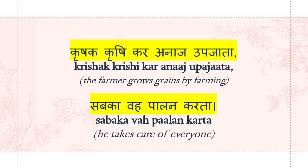Sabka vah palankarta. Palankarta means taking care or raising. Sabka means everyone — he takes care of everyone. In the lines Krishak krishikar anaj upajata and Sabka vah palankarta, there are two words which use the Ri Matra: Krishak and Krishi.